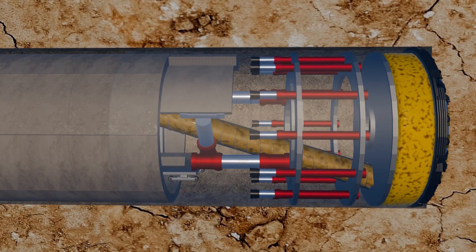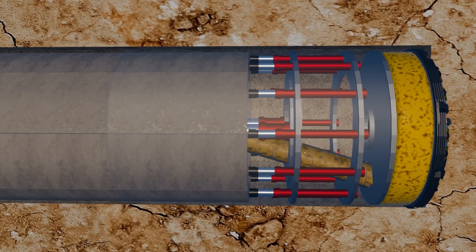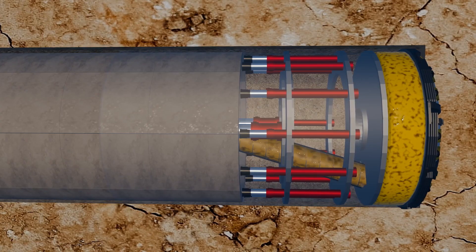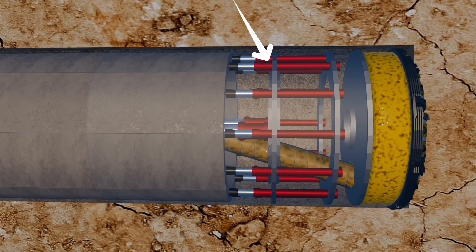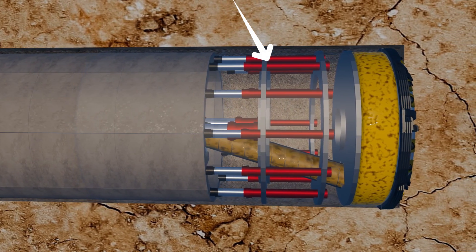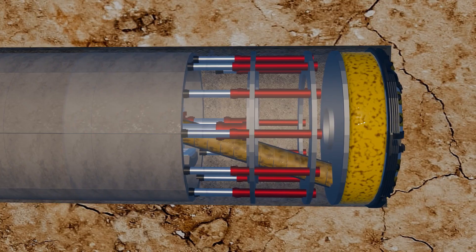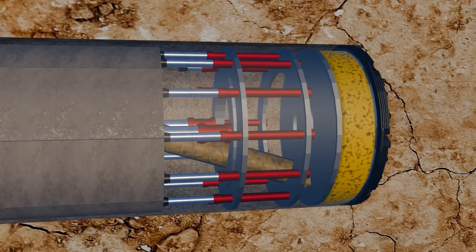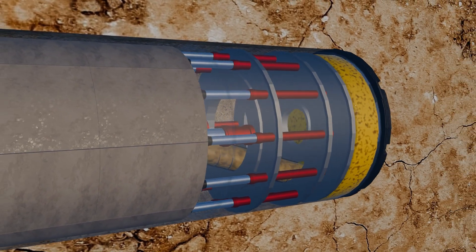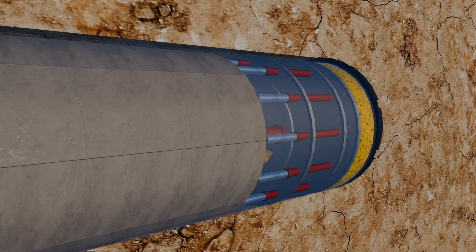Once a complete ring was constructed, thrust cylinders were employed to push the TBM head forward, ensuring it remained aligned on the intended tunnel path. This process, known as tunnel lining, involves using hydraulic thrust cylinders to maintain the TBM's position as it progresses through the tunnel.